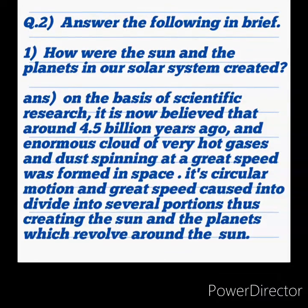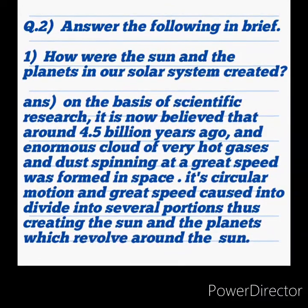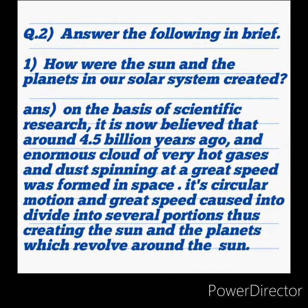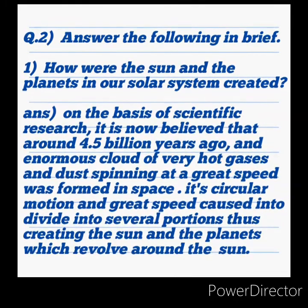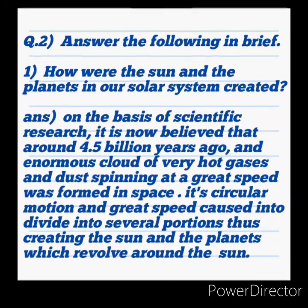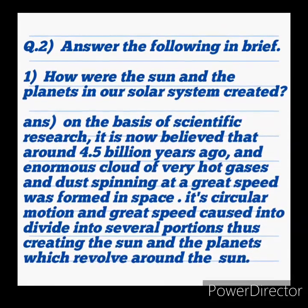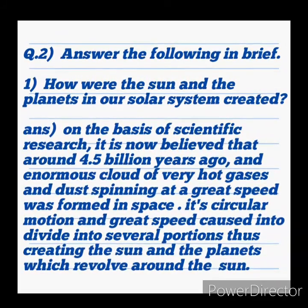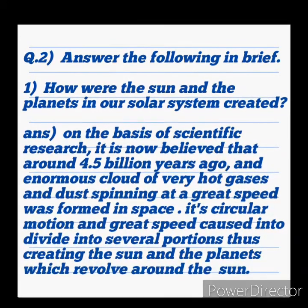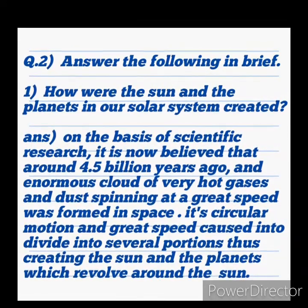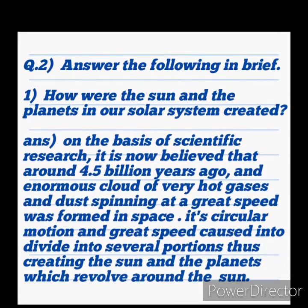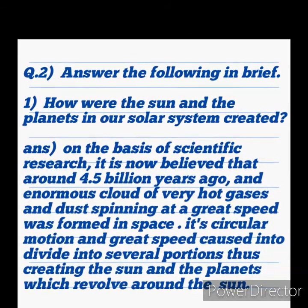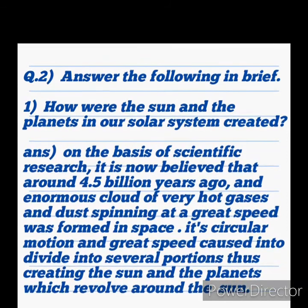Question No. 2: Answer the following. How were the sun and the planets in our solar system created? Answer: On the basis of scientific research, it is now believed that around 4.5 billion years ago, an enormous cloud of very hot gases and dust spinning at great speed was found in space. Its circular motion and great speed caused it to divide into several portions, thus creating the sun and the planets which revolve around the sun.